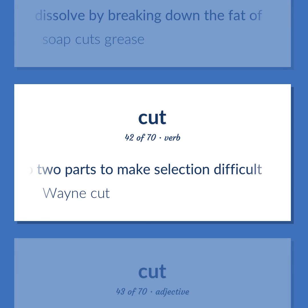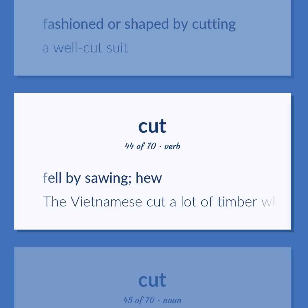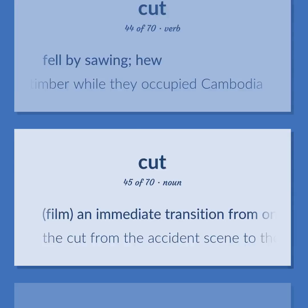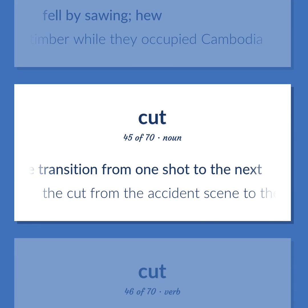Cut (adjective/noun): Fashioned or shaped by cutting — a well-cut suit. Fell by sawing — the Vietnamese cut a lot of timber while they occupied Cambodia. Film: An immediate transition from one shot to the next — the cut from the accident scene to the hospital seemed too abrupt.